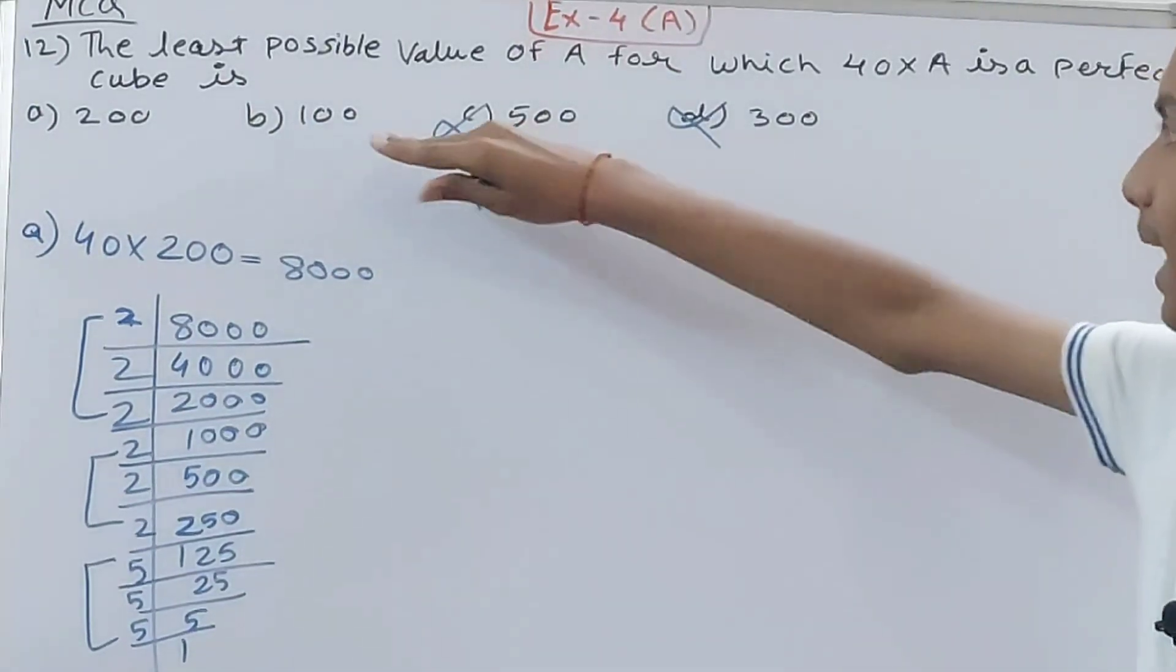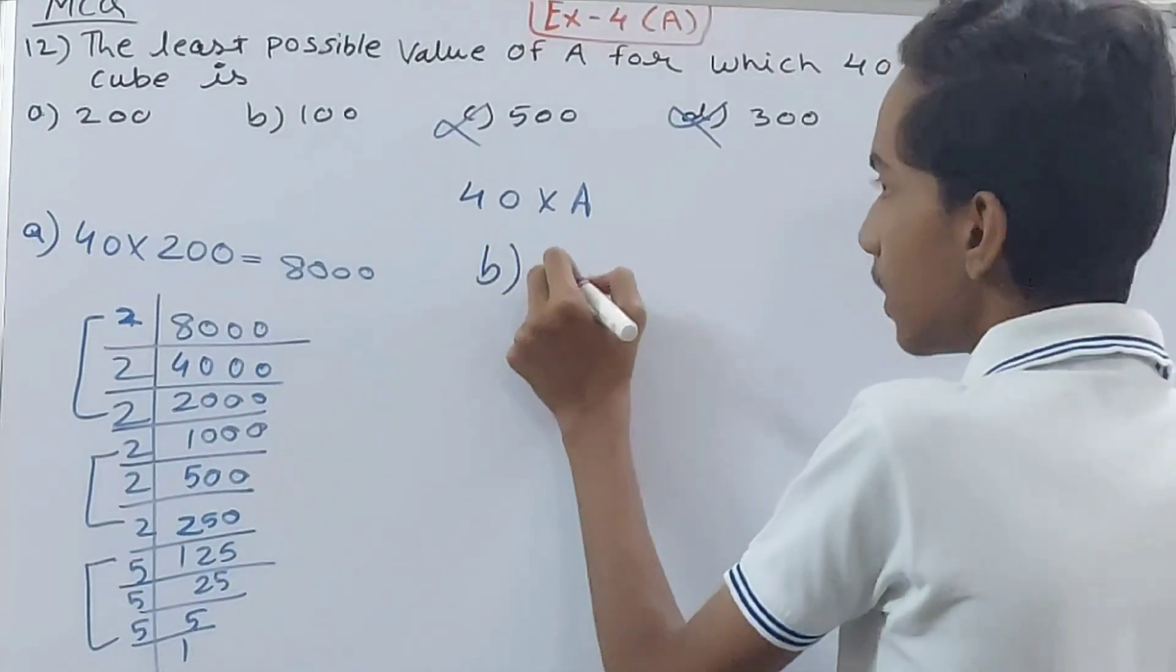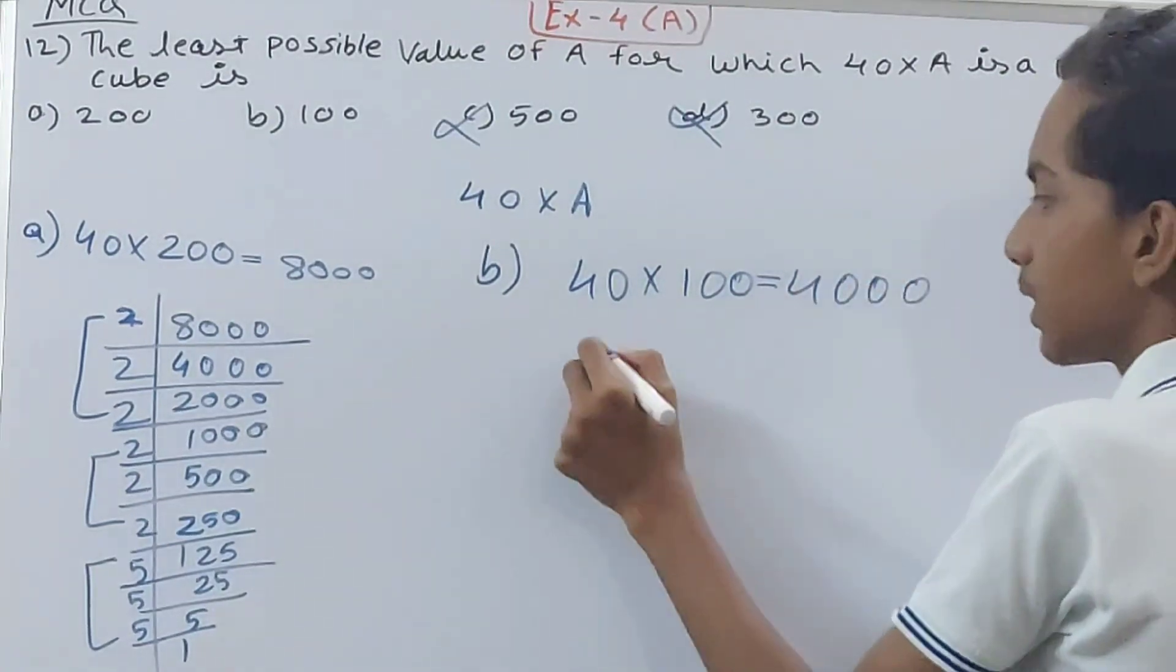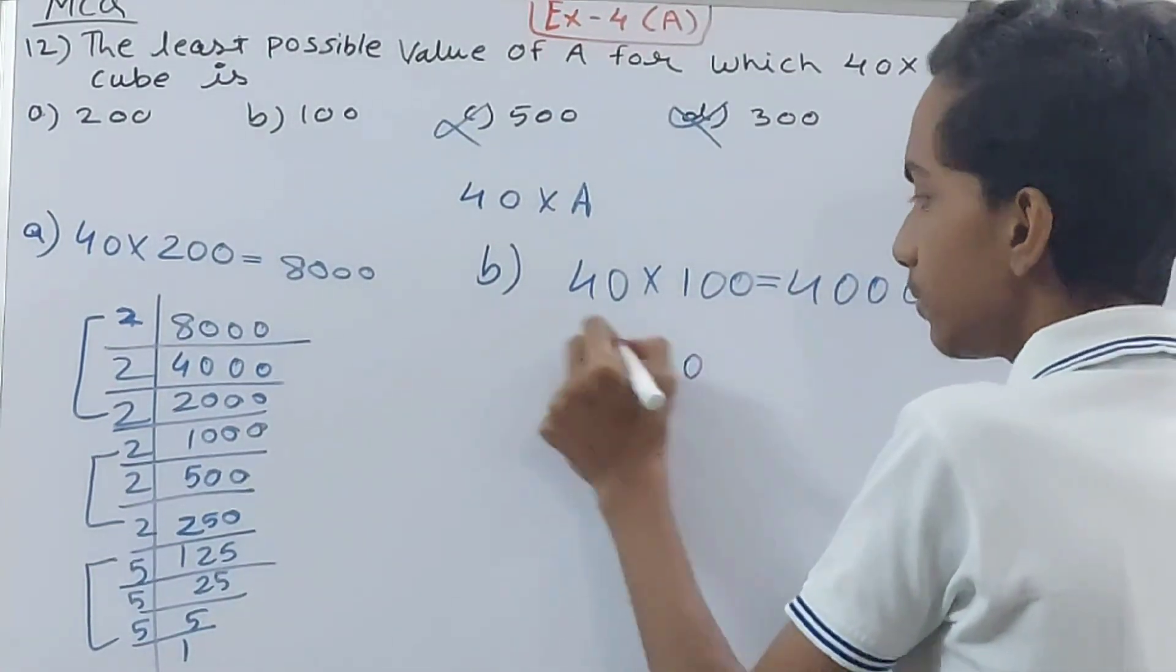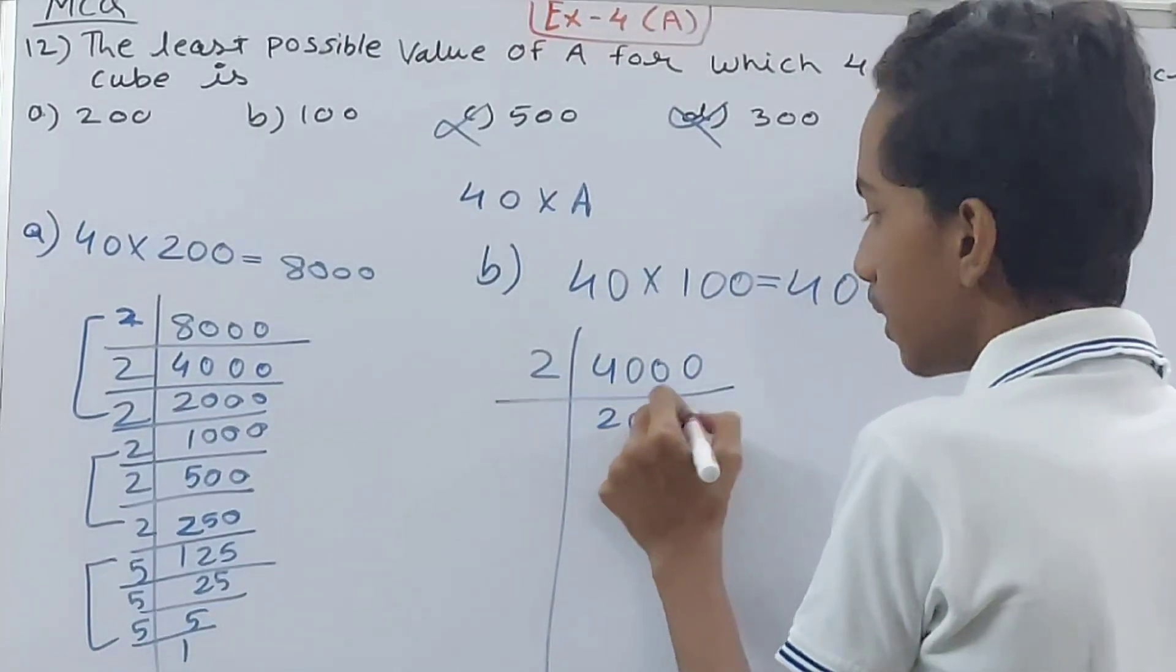So let's check for 100 also. That is 40 into 100, that is 4000. Let's check this 4000, so same factorization here also.